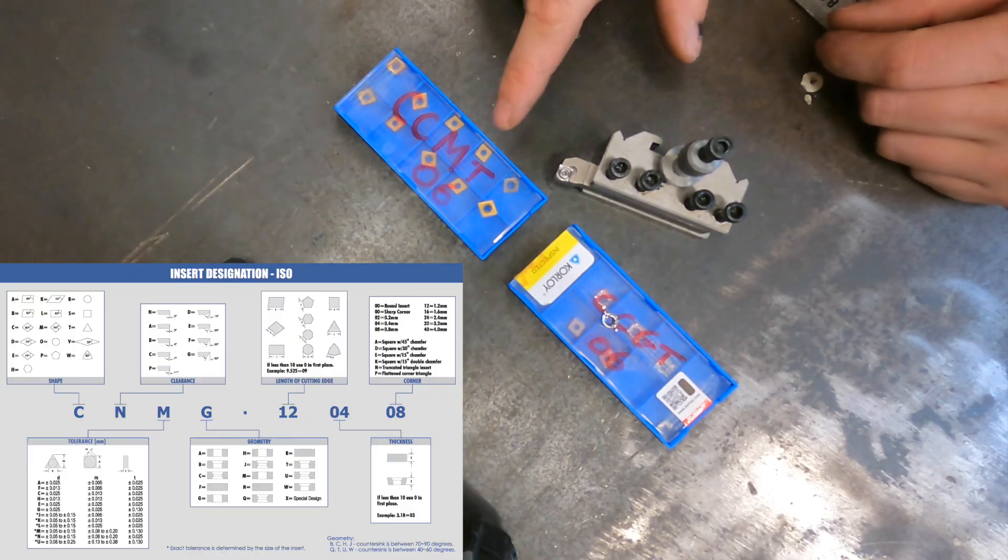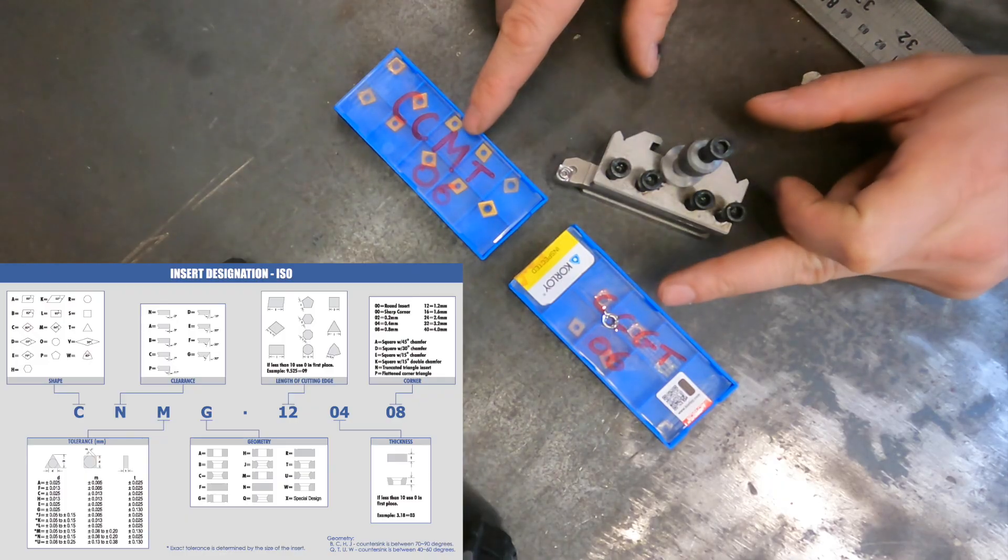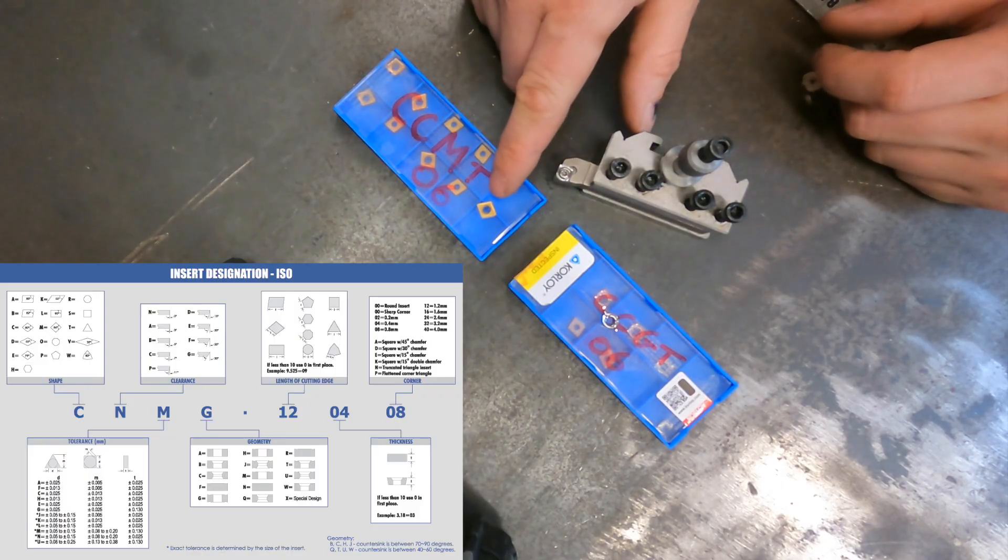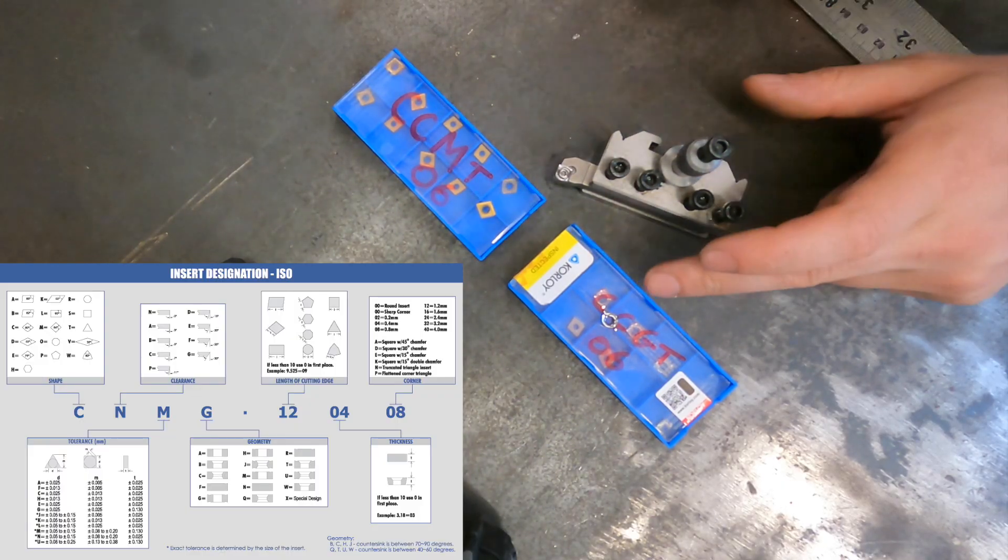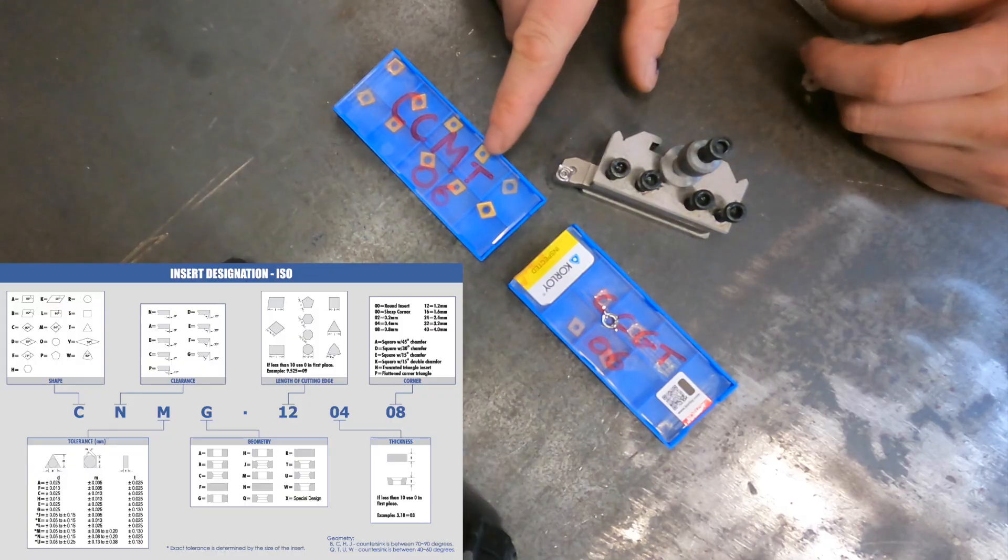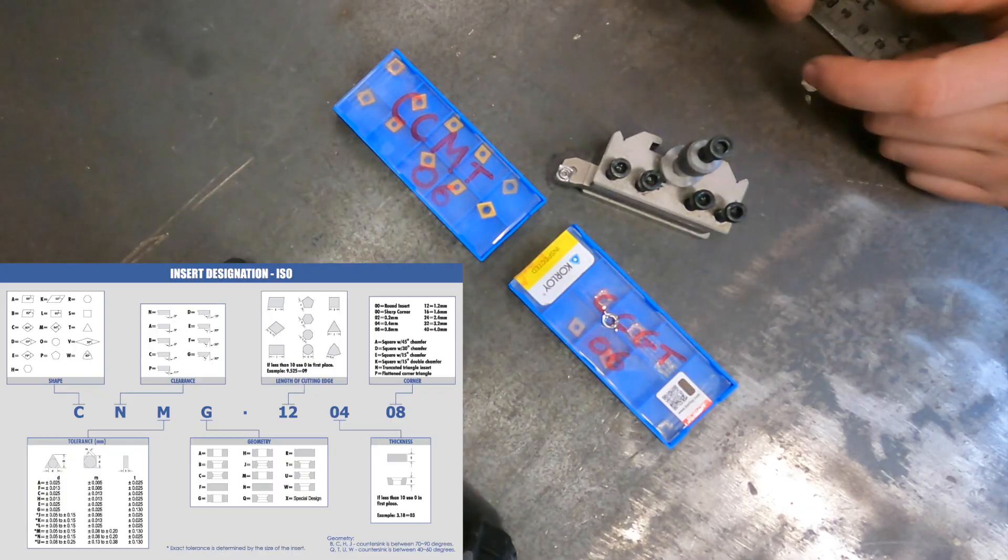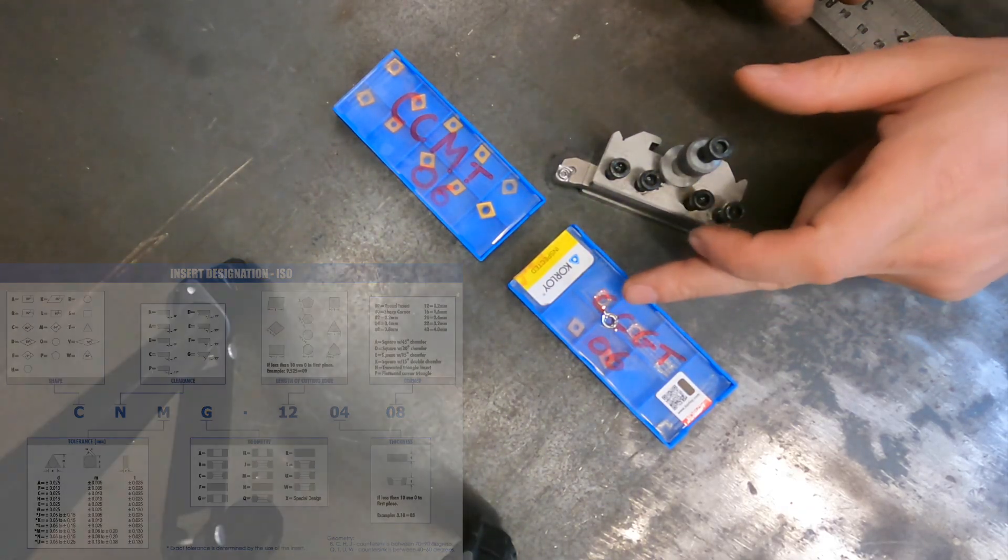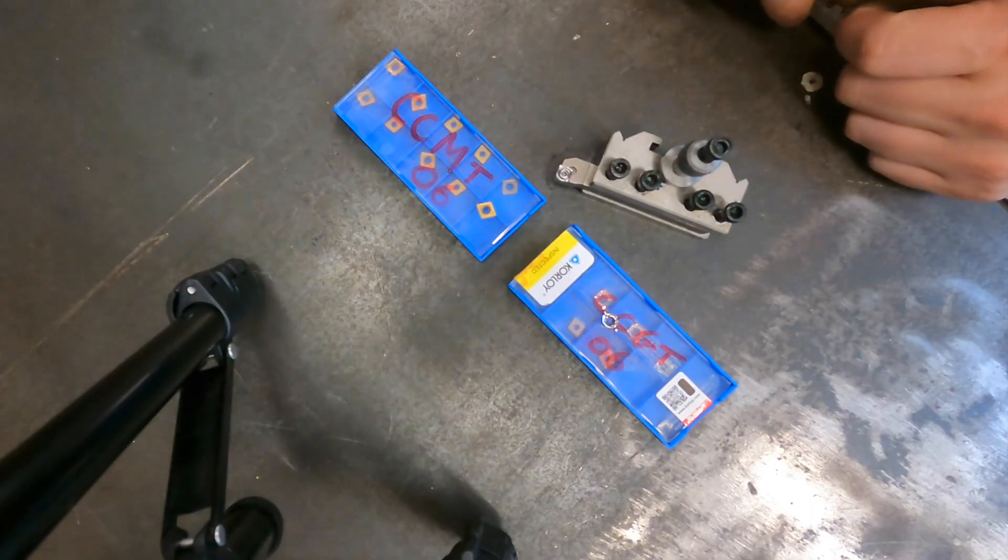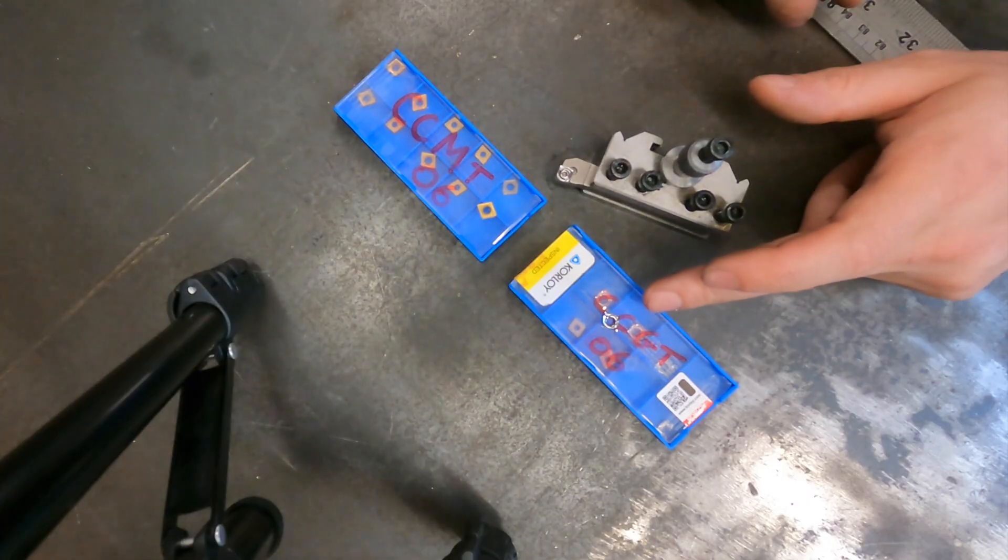Next is where it gets interesting because over here we've got a CCMT and over here we've got a CCGT. The G and M differs in the fact of the cutting tip has a slightly different nose radius. The nose radius on the CCGT is a lot sharper than the nose radius on the CCMT, meaning it's a lot sharper and can cut softer material a lot better. But the big thing that I've read up on these is when used on a mini lathe, the CCGT's actually give a really good finish not just on aluminum but also on mild steel. That's what we're gonna be testing today.